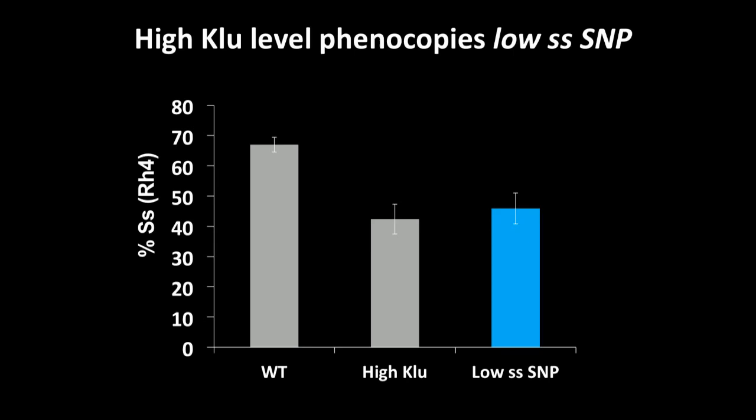So I just want to draw your attention to this one observation we made that is when we overexpressed Clue, these lines seem to phenocopy lines with the low spineless SNP. So that suggests to us that maybe there's some relationship between Clue levels and binding affinity and the spineless ratio.